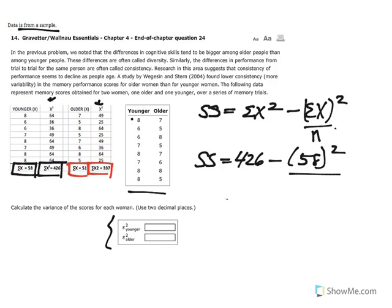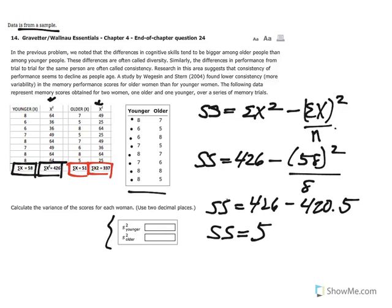And we then need to identify what the sample size is. So we have 1, 2, 3, 4, 5, 6, 7, 8 individuals. So n is equal to 8. So in our calculators if we take 58 squared and divide by 8 we then get 426 minus 420.5. And that allows us to calculate what our final SS is equal to. 426 minus 420.5 is equal to 5.5.